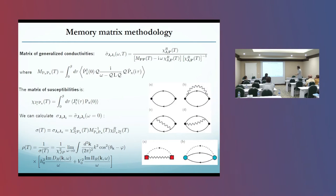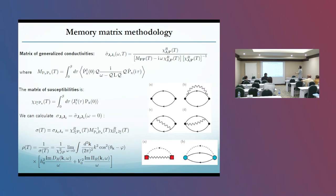In the memory matrix formalism, we can write down a matrix of generalized conductivities. Here is the retarded matrix of susceptibilities, which measures the overlap of the currents of the nearly conserved operators with the currents of interest. M here is the memory matrix itself. We can calculate the DC conductivity and from this calculate the resistivity — these are the Feynman diagrams that we have to calculate.